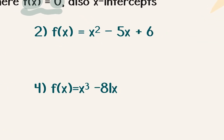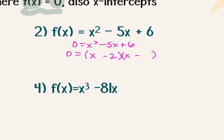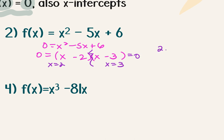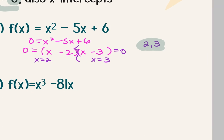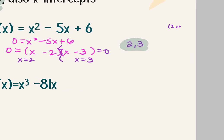For number 2, again replacing f of x with 0. I need to factor. Are there factors of positive 6 that sum to negative 5? Negative 2 and negative 3. Split and solve and I get x equals 2 and x equals 3. So there are two answers. If it wanted intercept form it would be (2,0) and (3,0), but it won't ask for it that way this section.